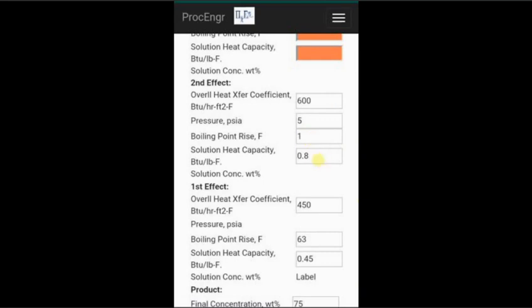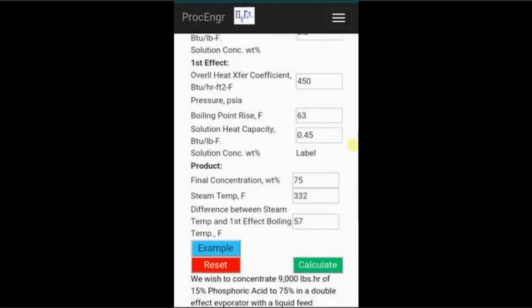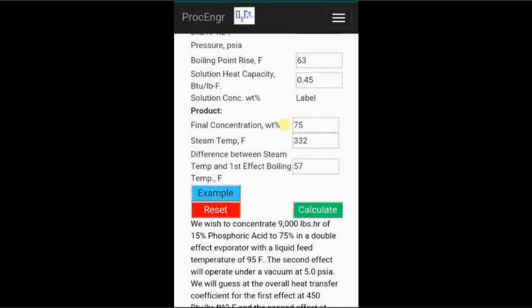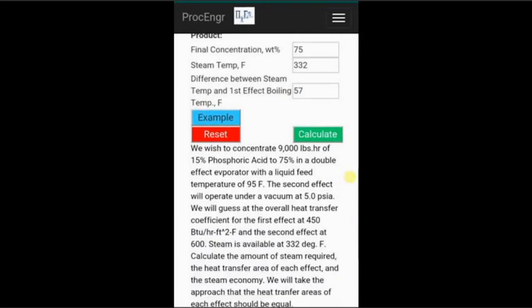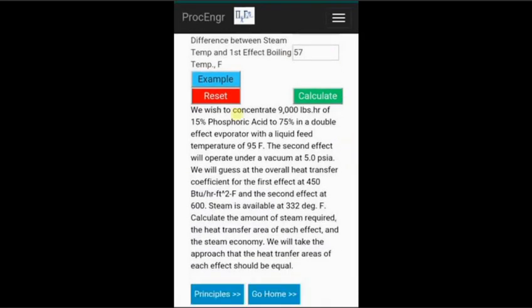In the first effect, we again have the assumed heat transfer coefficient, the designated pressure, boiling point rise, and heat capacity. And finally, we have the desired final phosphoric acid concentration, the steam temperature, and difference between steam temperature and first effect boiling point.